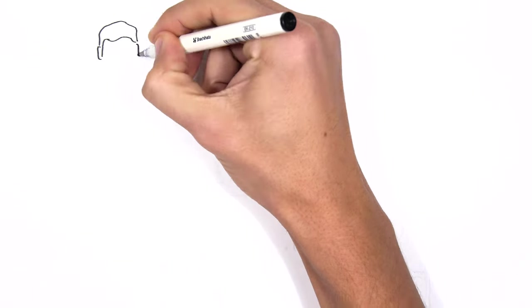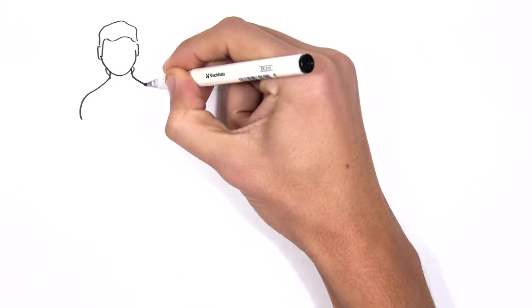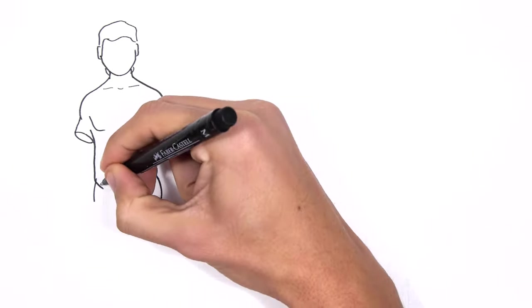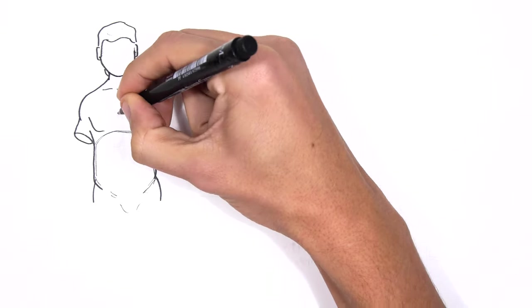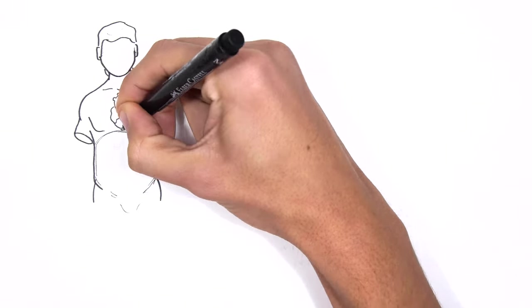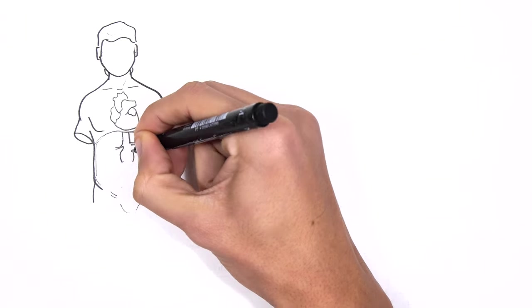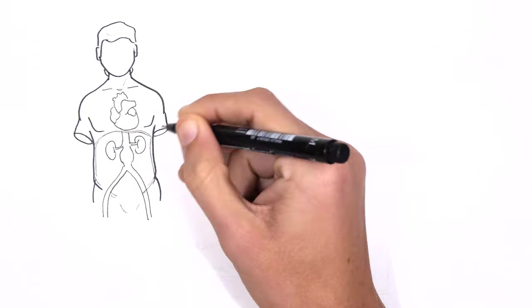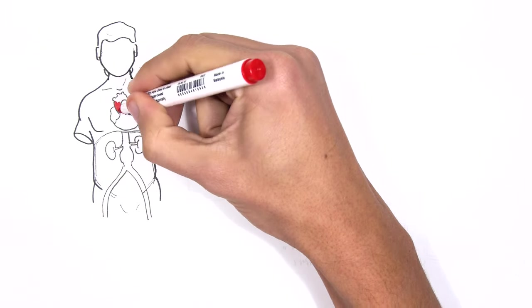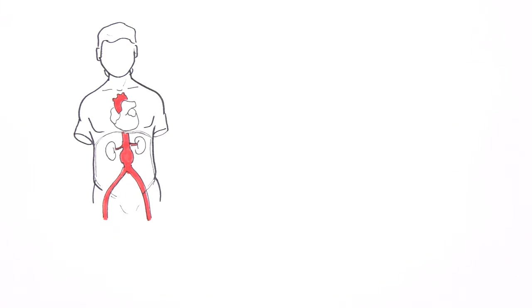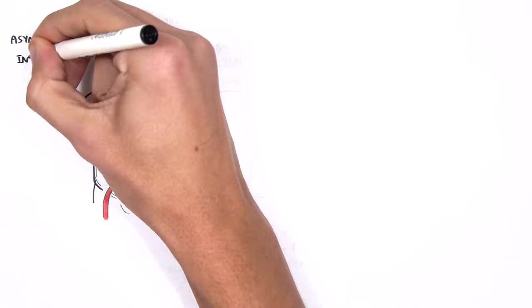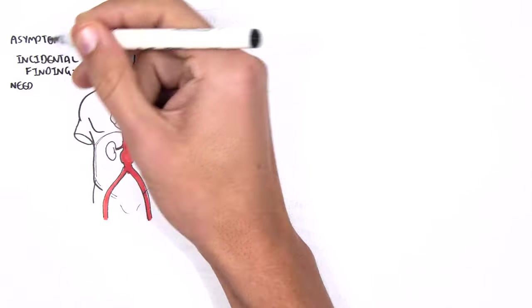In this video we're going to talk about abdominal aortic aneurysm — this is an overview and introduction. Here I'm drawing the descending aorta which comes from the aortic arch and the heart. The renal arteries come off the descending aorta and supply the kidneys. The majority of people with AAA are asymptomatic and often AAA is an incidental finding.